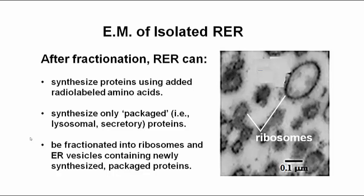They should contain proteins found in Golgi vesicles, lysosomes, or perhaps cellular secretions, but not proteins found in the cytoplasm, or associated with other organelles like mitochondria, chloroplasts, or nuclei. In fact, isolates like these meet these criteria, and are clearly RER.